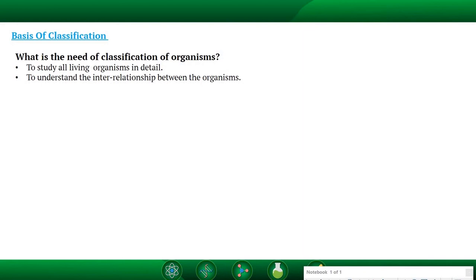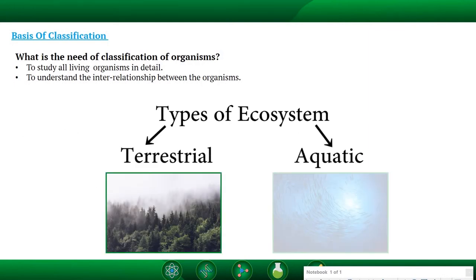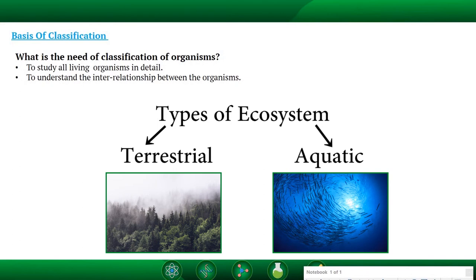All organisms and animals are present in, or survive in, an ecosystem. There are two types of ecosystem: one is terrestrial or forest and the other is aquatic. All organisms present in nature depend on each other, and hence to understand their interrelationship, we need to do classification. To study this huge number of organisms, we need to do classification.